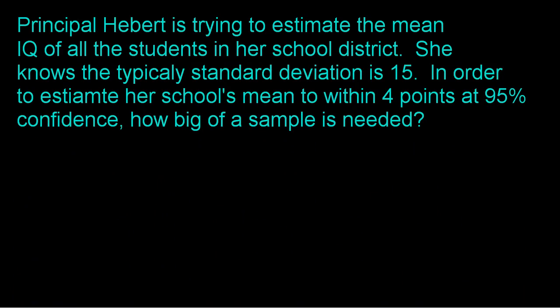So Principal Hebert is trying to estimate the mean IQ of all the students in her school district. She knows that the typical standard deviation for IQ is 15, and that's true. Typically, the standard deviation for IQ scores is 15. In order to estimate her school's mean IQ to within four points, so she wants an interval that's pretty tight. She wants a margin of error that is only up and down four points. That's going to be pretty small, so what sample size is it going to take to do that and still be 95% confident?